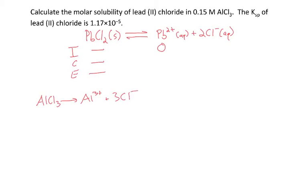If my concentration of aluminum chloride is 0.15 molar, the concentration of the chloride ions is going to be three times that. So my chloride ion concentration is 0.45 molar. That's what I'll put in the initial concentration of chloride.